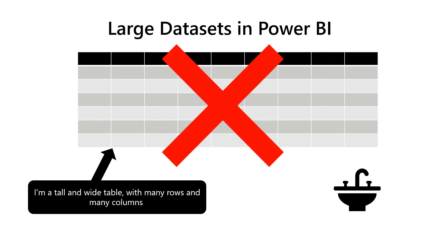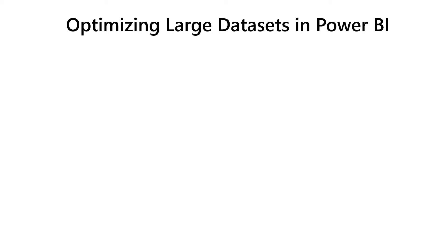It's always better to start small and keep it simple, and then extend the data model with additional tables and columns when the business case requires them. Here is the list of recommended practices for large dataset optimization. Import only necessary data. I know that it sounds obvious, but trust me, in most cases sticking with just this simple rule will make astonishing savings in the data model size.